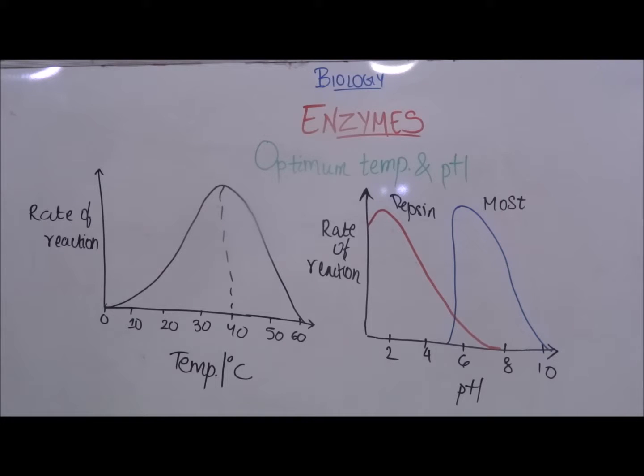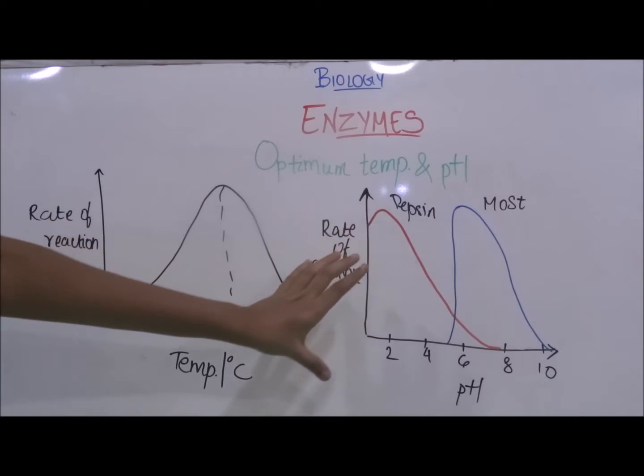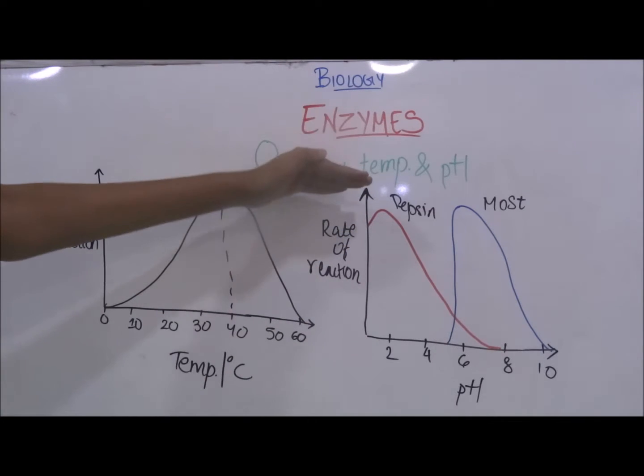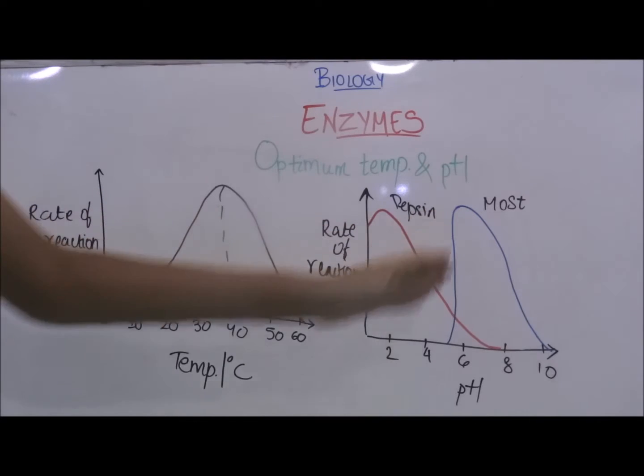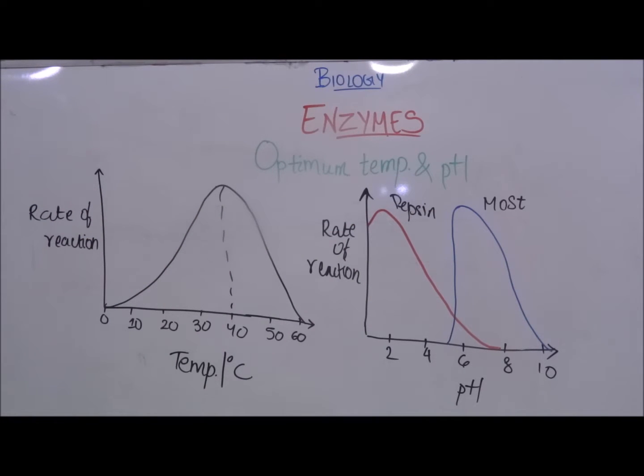Same way the optimum pH for pepsin is pH of 2 because the rate of reaction is highest at that pH. And for most other enzymes the optimum pH is pH 7 because the rate of reaction is highest at that pH.